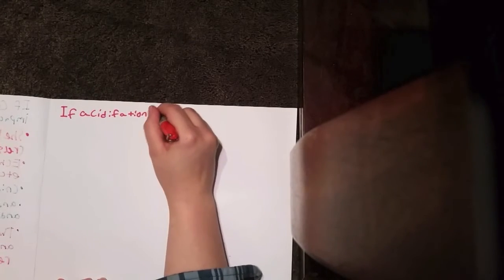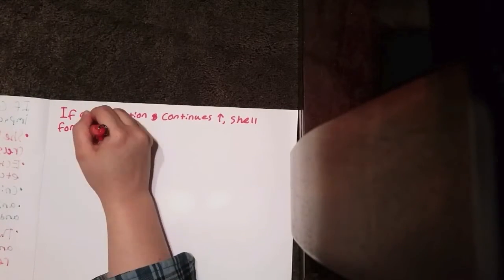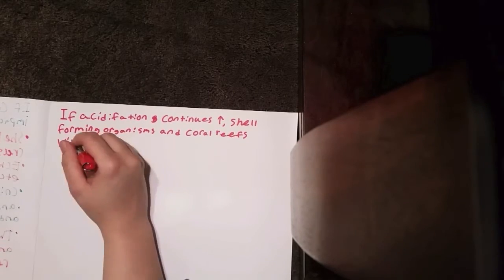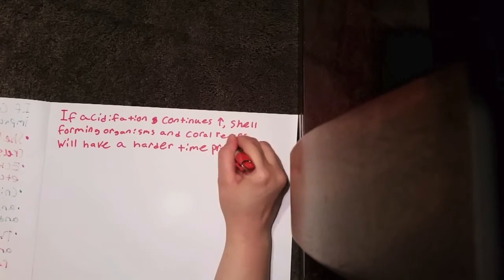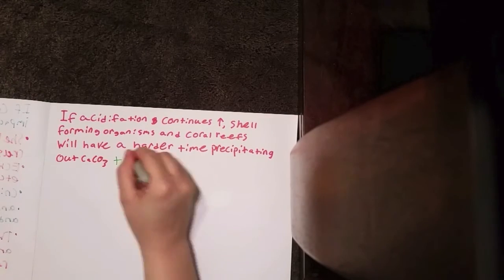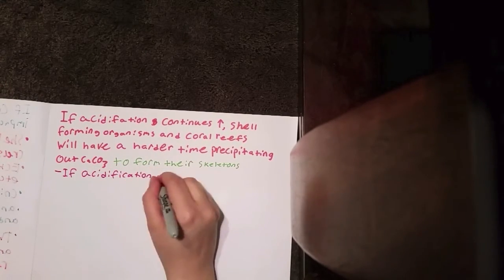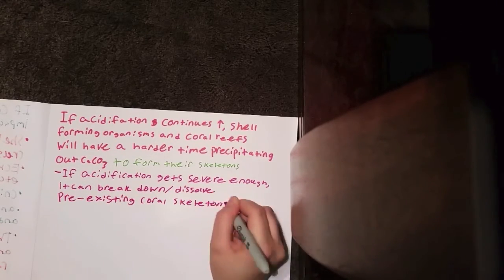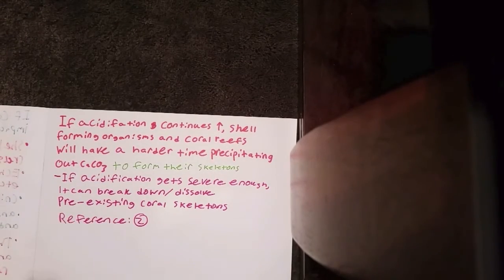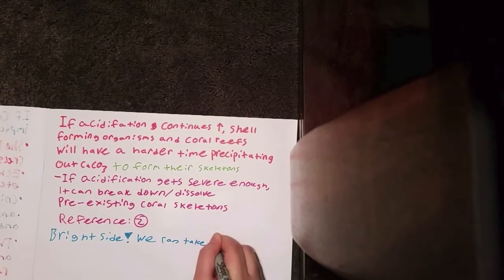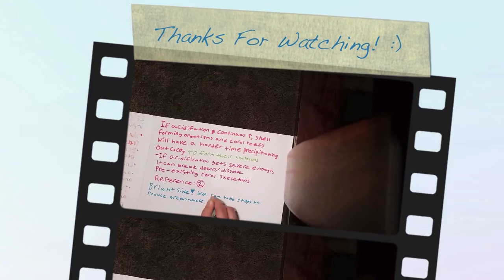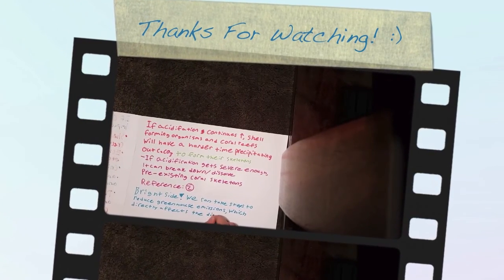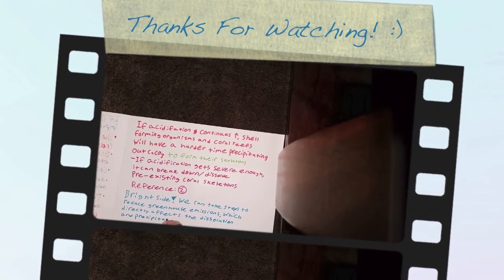If acidification of the ocean continues to increase, shell-forming organisms and coral reefs will have a harder time precipitating out calcium carbonate to form their skeletons. Even worse, if this acidification gets severe enough, you can actually break down and dissolve the existing coral skeletons. However, there is a bright side — we can always take steps to reduce greenhouse emissions, which directly affect the dissolution and precipitation of calcium carbonate.